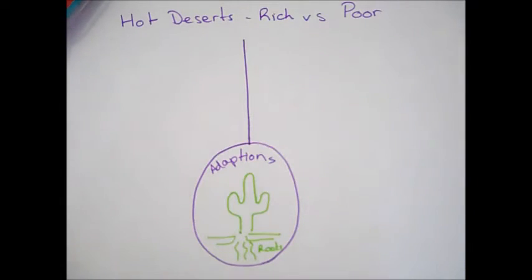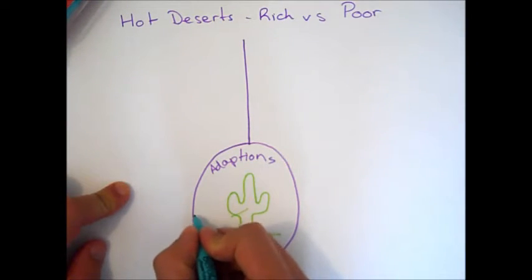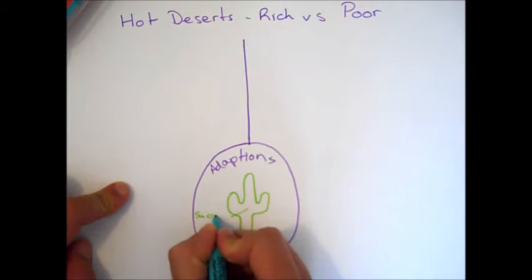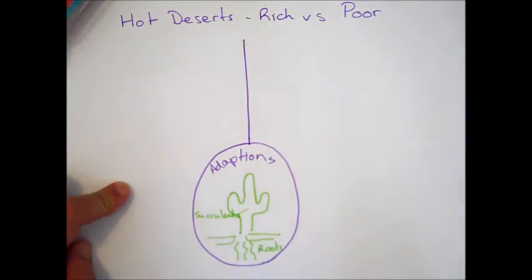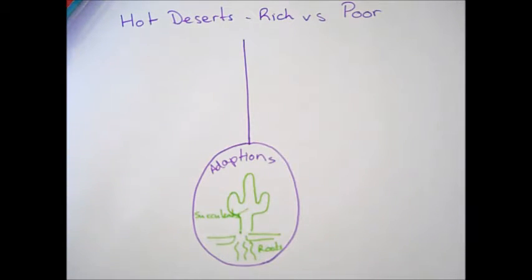Moving our way up. We can refer to cacti as things called succulents. So, succulents are species of plants designed to live in arid conditions because they can store water either within their fleshy tissue or actually inside them. And things like the saguaro cactus are hollow so that water can be stored inside them.